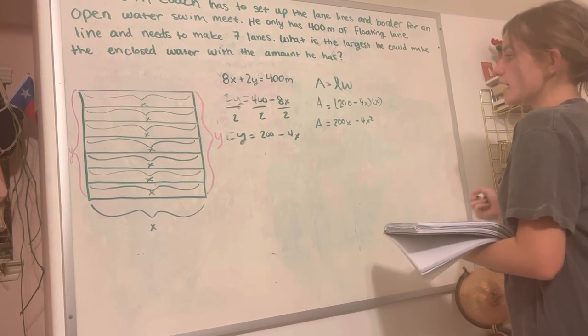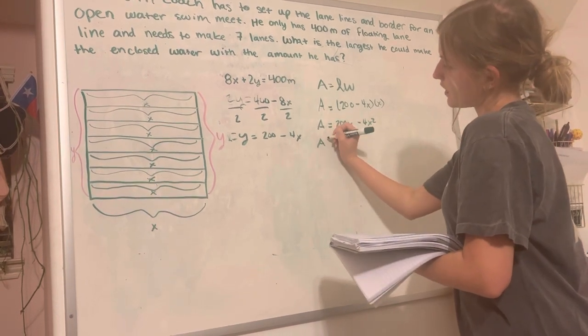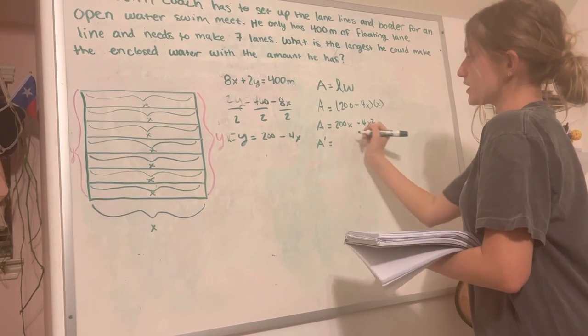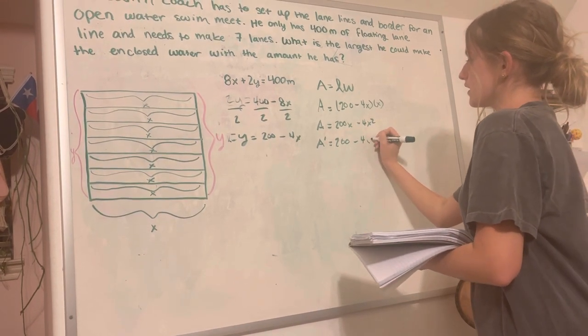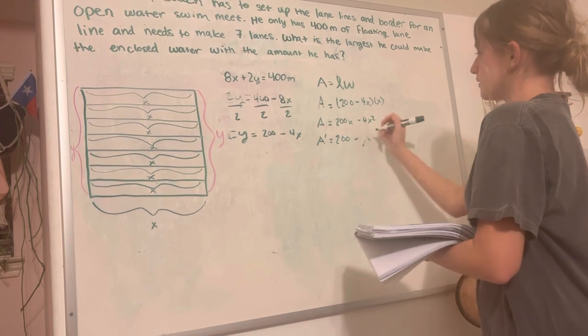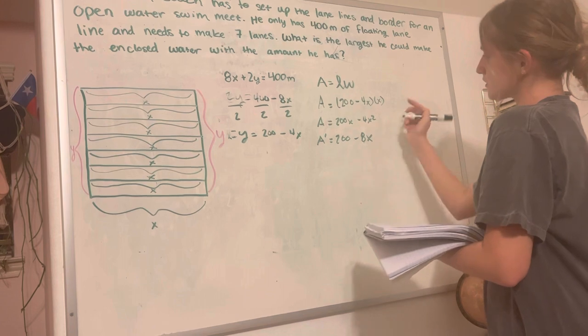Now, to find the maximum for that, we've got to find the derivative. So a prime is going to be quite simple. It's just 200 minus 8x. I'm going to take the exponent down.